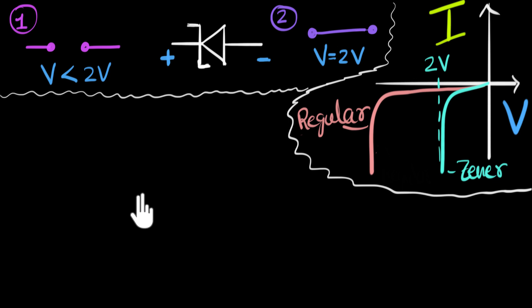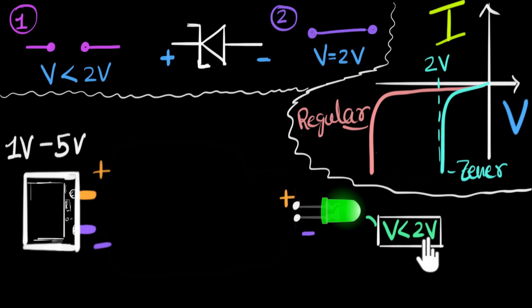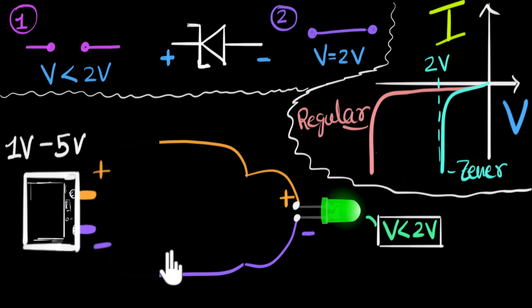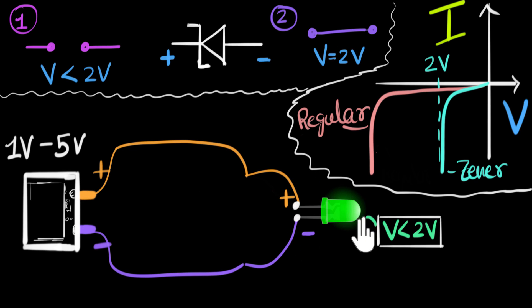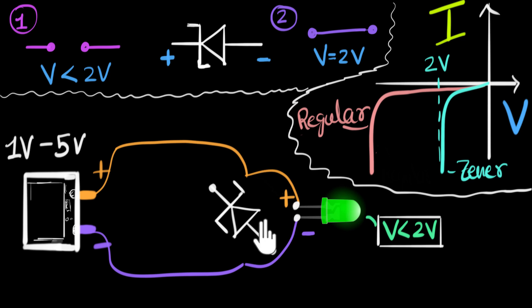Now using this, let's see how we can attach our LED to that power supply. Here's our LED — its voltage shouldn't exceed two volts. The supply can deliver anything between one volt to five volts. If we directly connect the LED to the supply, there's a chance the LED can blow up because the voltage can exceed two volts. We can use a Zener diode here, because the voltage across the Zener diode under reverse bias can never exceed two volts. So let's attach the Zener diode across the LED.